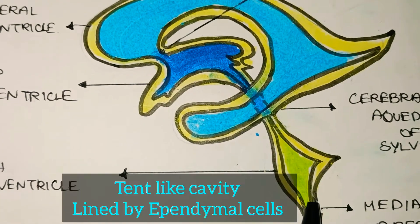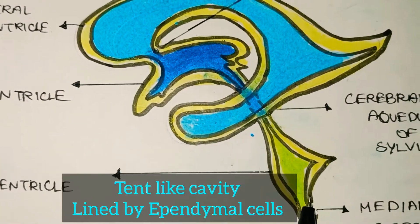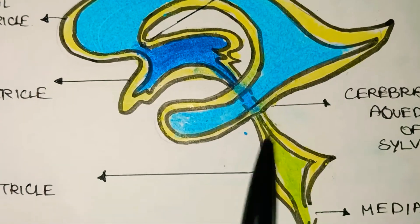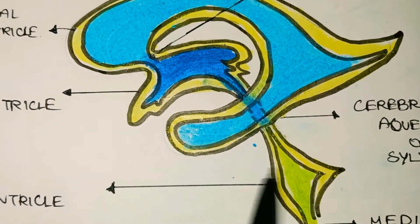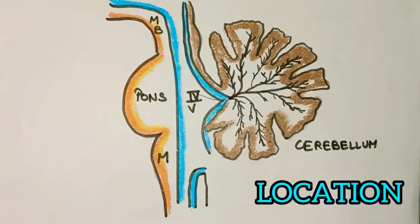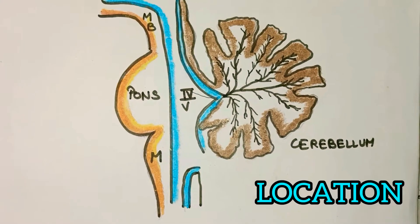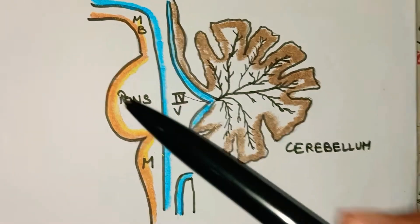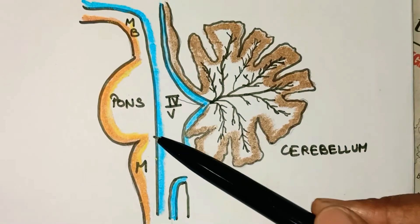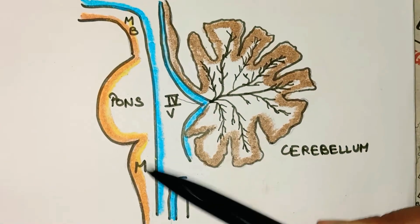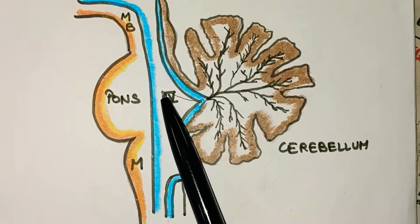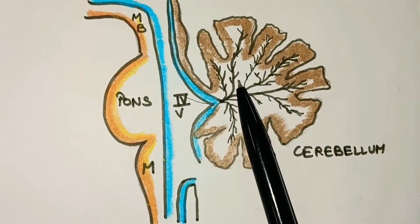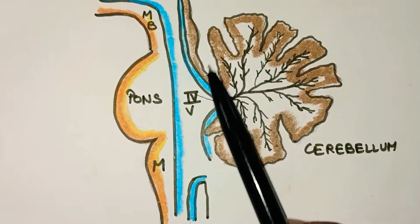The 4th ventricle is a tent-like cavity which is lined by ependymal cells and filled with CSF. In terms of location, it is present at the posterior cranial fossa, behind the pons and upper part of the medulla, and in front of the cerebellum.